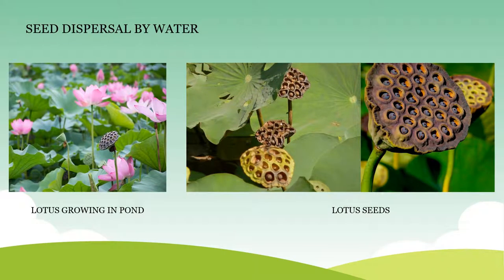Now we will discuss about seed dispersal by water. Lotus seeds get dispersed by water. Lotus grows in water and its seeds are heavy. So these seeds fall to the bottom of the water and are carried by the flow of water, and get germinated wherever there are favorable conditions. Seeds of almost all water plants get dispersed by water.